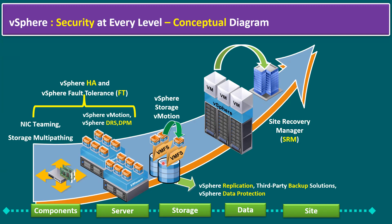We can secure our data not only at the hardware, server, and storage layers, but also at the data layer. We can use VMware native backup tools like vSphere Data Protection and vSphere Replication, or utilize third-party backup solutions — for example, HPE Zerto, which is an HPE-authorized backup solution supporting data protection and disaster recovery. Other third-party tools like Cohesity, Rubrik, and Veritas NetBackup support backup, restoration, and archival purposes.